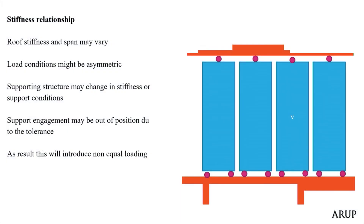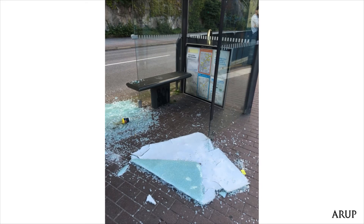Thinking about load distribution — roofs are probably not that stiff, they may have different load paths, and loads will never be equally distributed across many elements. Supporting structures are also not perfectly stiff, so panels will always see different loading conditions. If the glass wall is part of the primary structure, the consequence of failure is quite different from a facade panel or a bus shelter.